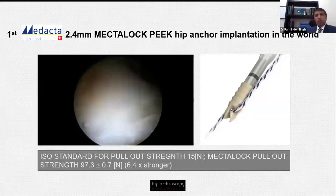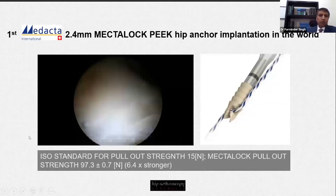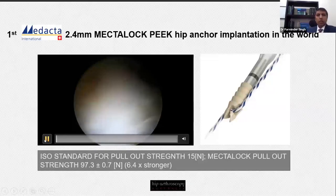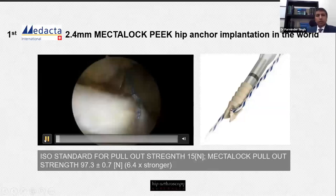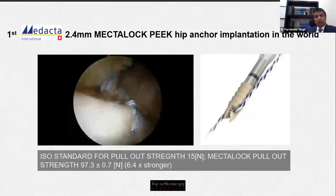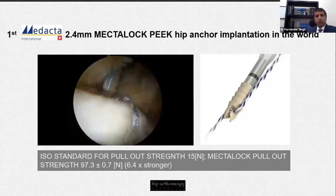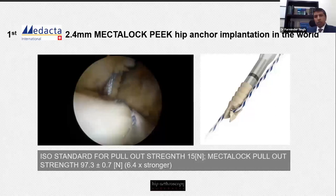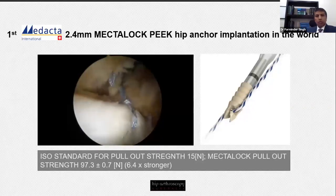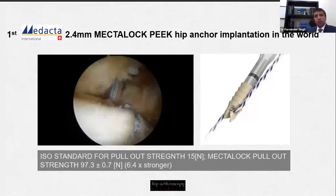Medecta have now released their own version of the nautilus anchor — a 2.4 PEEK metal-lock anchor. One of the significant findings in their preclinical testing was that the pull-out strength is 6.4 times stronger than what's required in the ISO standard. I've recently gotten through my learning curve with this anchor and find it a very helpful device.